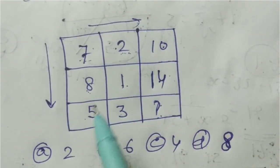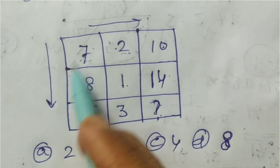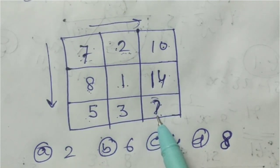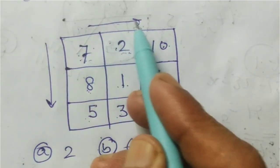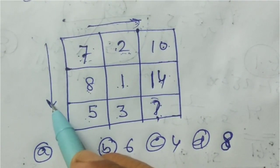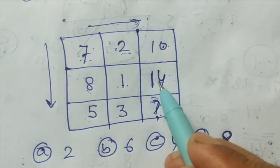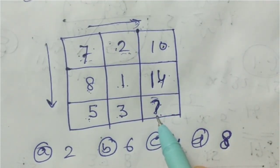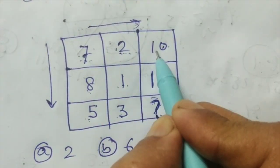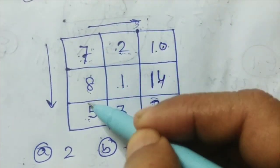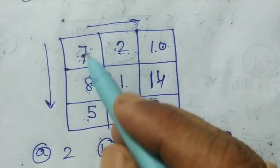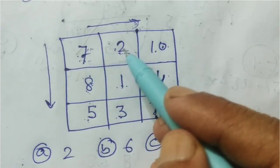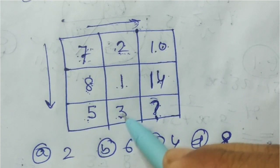In this question, what is the missing number? The numbers are 7, 2, 10; 8, 1, 14; 5, 3, and missing. Think horizontally or vertically. Trying: 7 minus 8 gives 1 — 5 more, not possible. 7 plus 8 is 15, divided by 3 is 5 — but applying 2 plus 1 is 3, divided by 3 is 1, not matching.